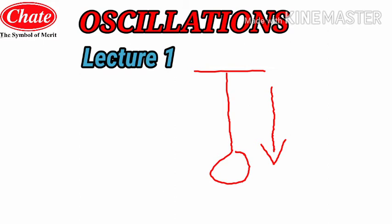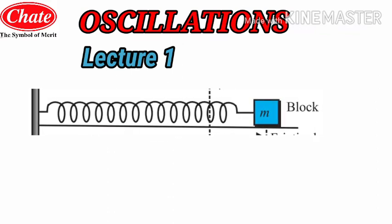For your better understanding, we will see a perfect example with a proper diagram. The diagram of the example of oscillation is now appearing on your screen. You can see a spring which is attached to a rigid hinged support at one end, and at the other end a block is attached. The other end of the spring is rigidly fixed to the hinge support. This is the arrangement we will use to understand oscillation.